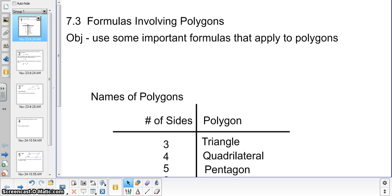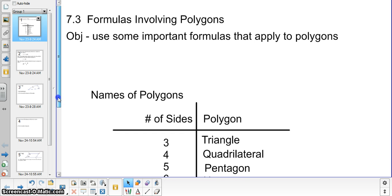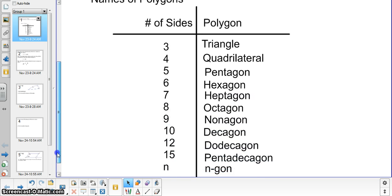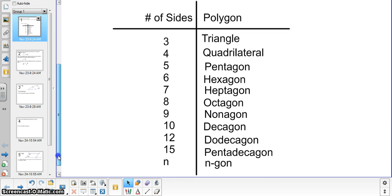First of all, we are going to talk about polygons and the different names of these polygons. You can see from this table below that we have the number of sides on the left hand side and the name of the polygon on the right hand side. This is also in your textbook on page 307, so you can either write them down from there or please go ahead and pause and write these down.